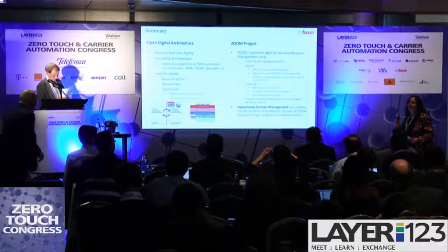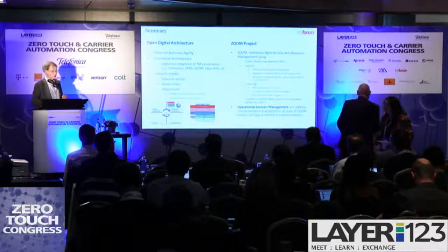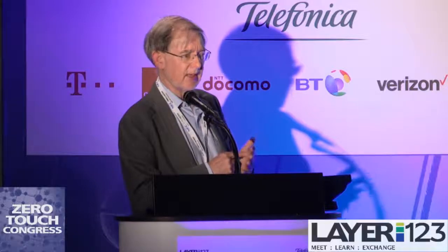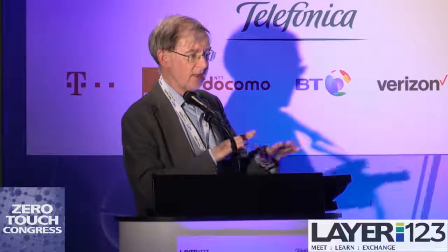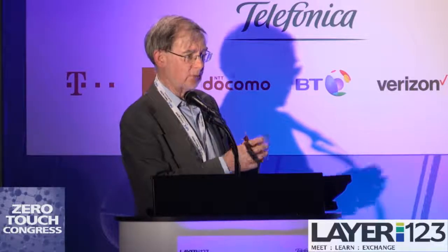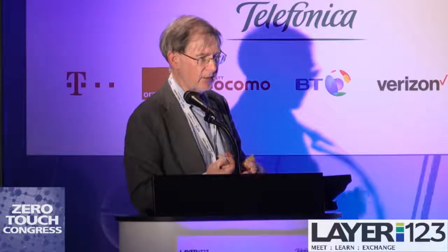Q: I'd be interested to know the difference between a dynamic control loop and a closed control loop. A: A closed control loop can be implemented in a static way. What we've seen from several catalysts is that they need to be able to change the behaviour of those control loops based on broader conditions. One example from Huawei: you have pre-set plans for the closed control loops and make decisions on which plan to run based on awareness of the wider network situation. That's what we mean by 'dynamic.' Our API is also polymorphic, meaning we can dynamically change the behaviour and data payloads in the APIs at runtime through configuration.